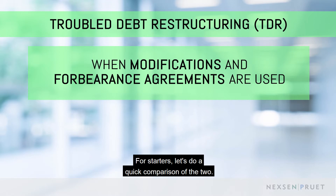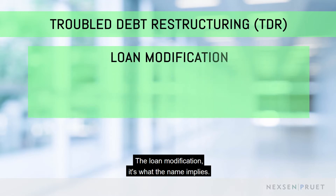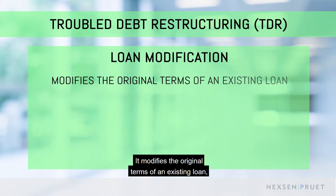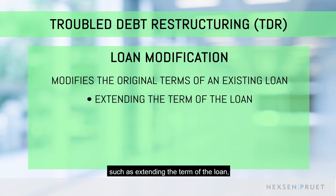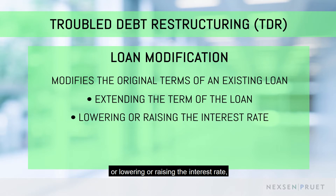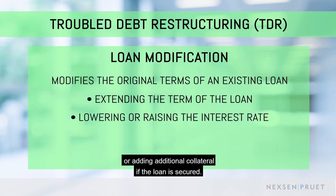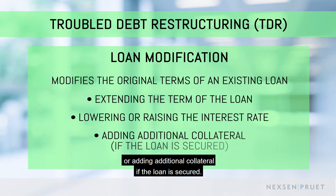For starters, let's do a quick comparison of the two. The loan modification — it's what the name implies. It modifies the original terms of an existing loan, such as extending the term of the loan, or lowering or raising the interest rate, or adding additional collateral if the loan is secured.